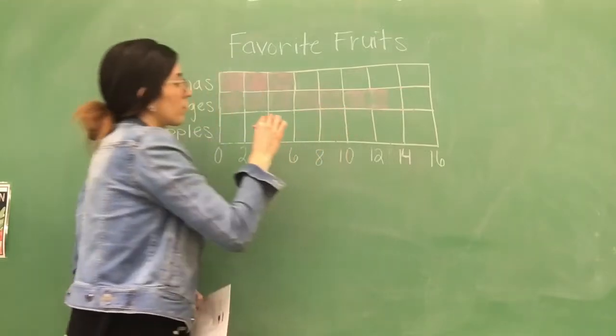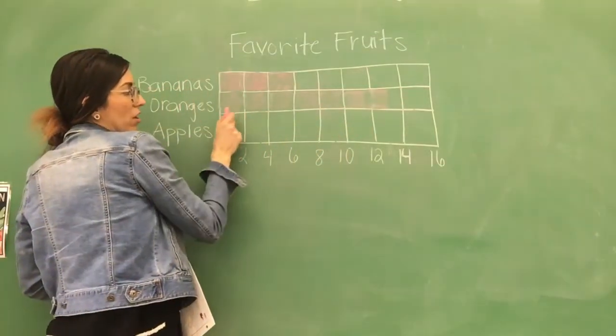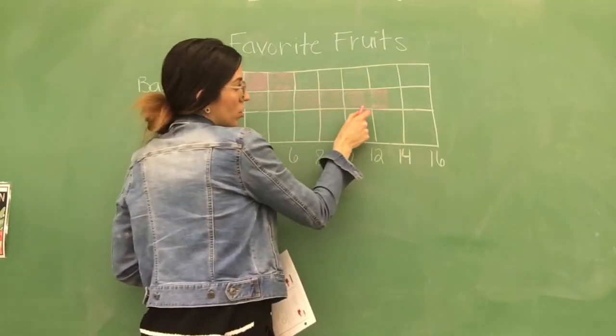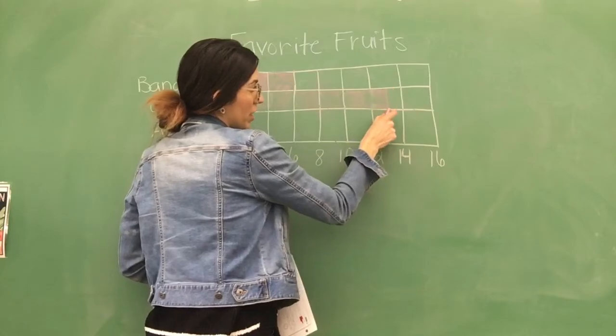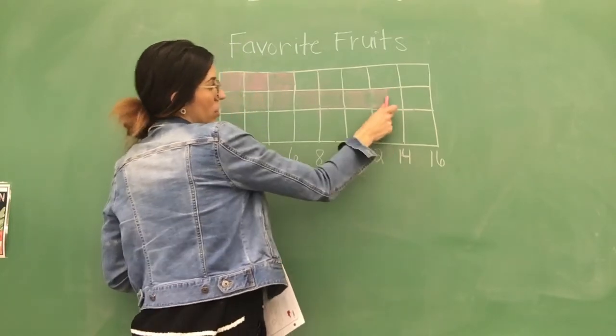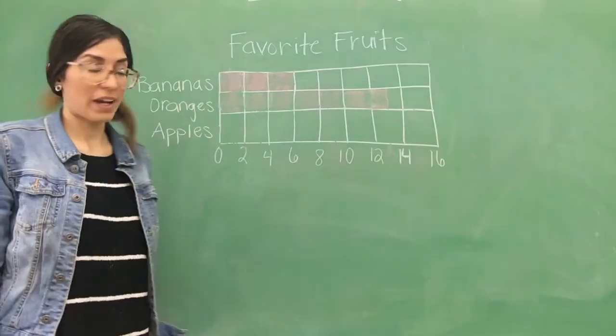Halfway. Okay? So, we have all the way to, no, we stop right here because it's halfway. So, it's 13. 13 students loved oranges, okay?